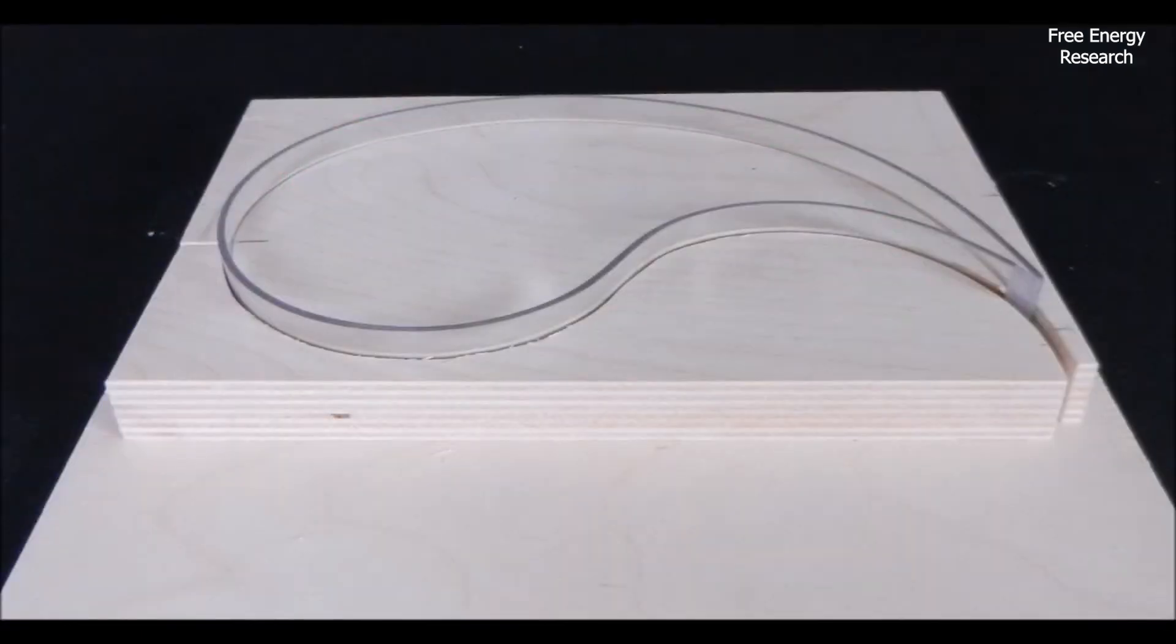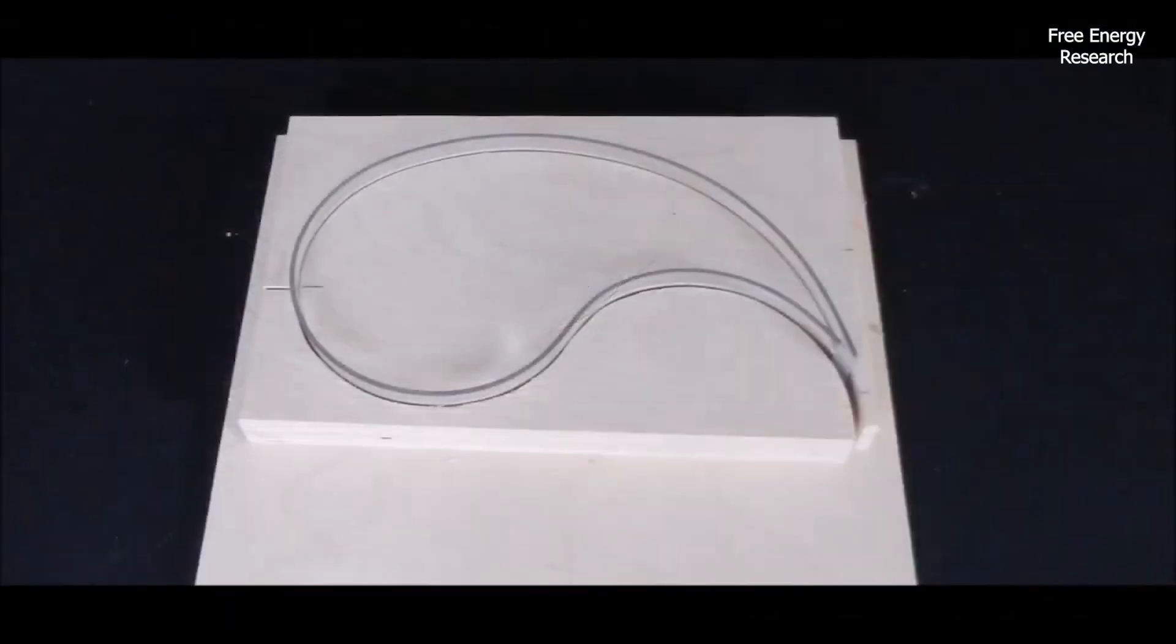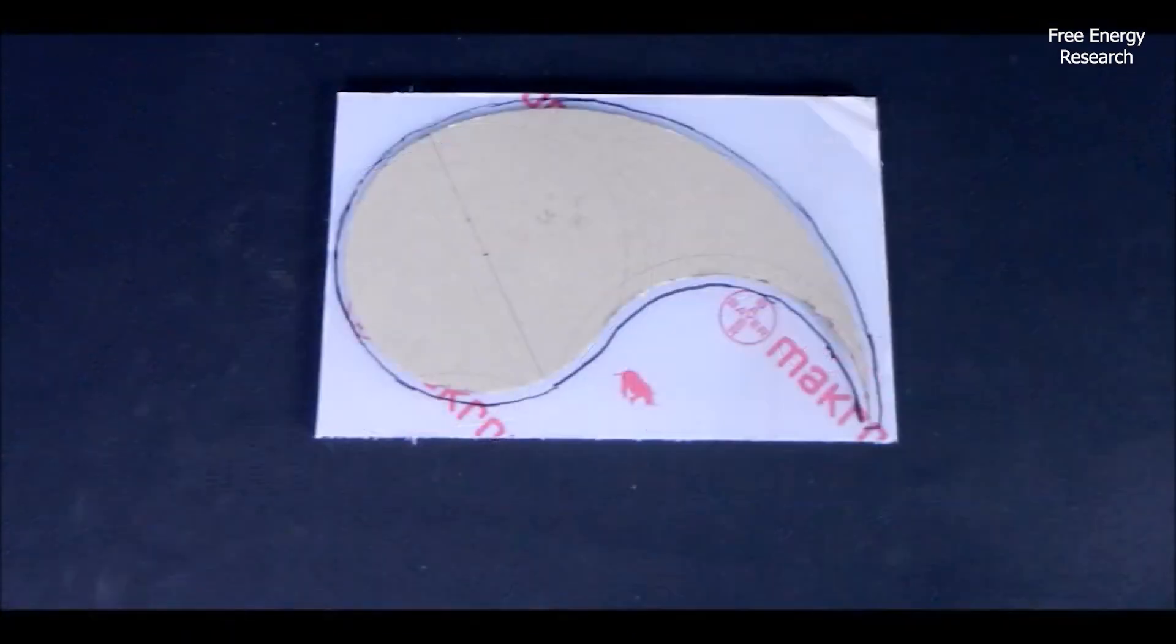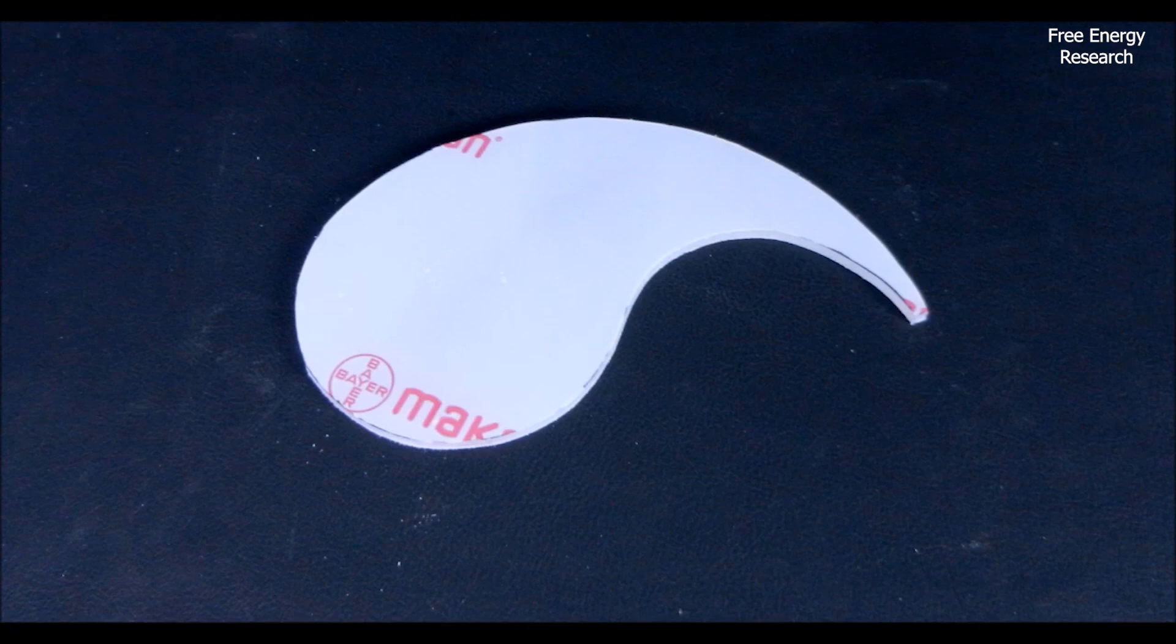Using durable plastic, six identical sections are cut and layered together to form three compartments. These are carefully glued to ensure a tight seal, and any rough edges are smoothed out for a polished finish.